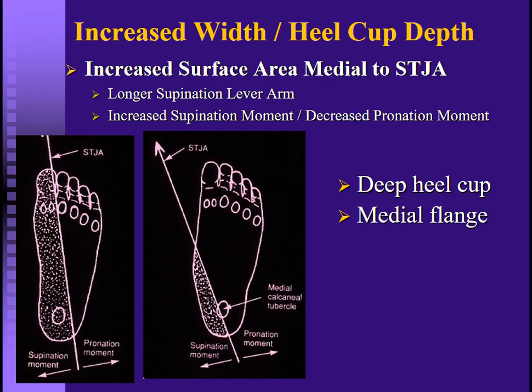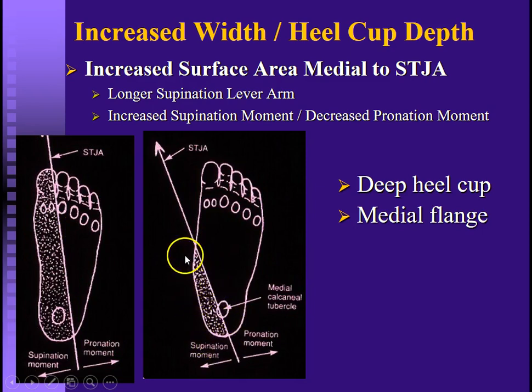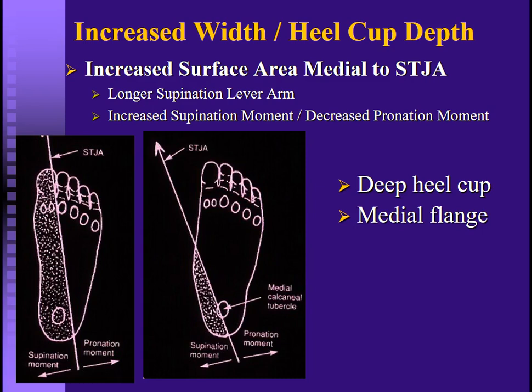My personal favorite is vacuum-form polypropylene because we're going to be using deeper heel cups and medial flanges, and that material conforms to curvature extremely well and is very easy to adjust after the fact. We want a deeper-than-average heel cup and a medial flange to wrap up around the arch, putting more surface area medial to the subtalar joint axis to apply supinatory torque and limit excessive pronation. A deep heel cup by definition is about 18 millimeters; a standard one is 14 millimeters. For this problem, I'll often use a very deep heel cup — 22, 24, even 26 millimeters of depth.